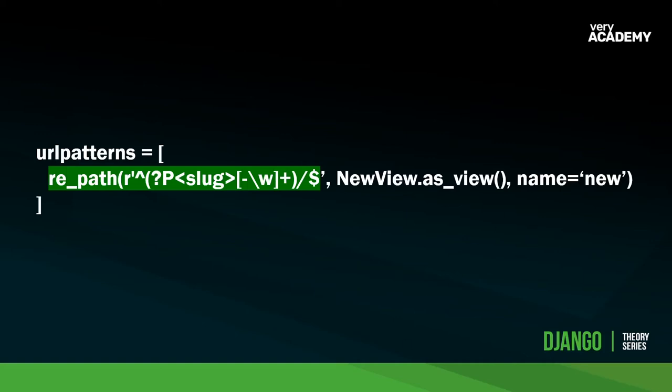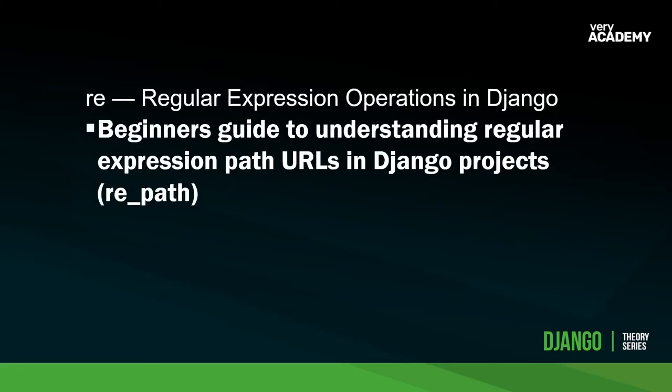Hello and welcome back to another tutorial. You may come across what you can see here in green in the Django URL patterns - this is a regular expression matching operation, or regex for short, sometimes also referred to as regexp. This is the topic of this tutorial: a beginner's guide to understanding regular expressions.